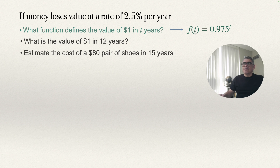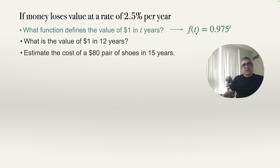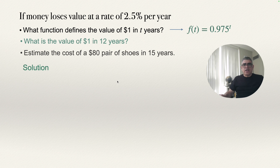Let's write the answer at the top: f(t) = 0.975^t. The independent variable is time in years. Now I can know the value of the dollar in 10 years, 20 years, etc. The only thing I need to do is substitute t by the number of years I want to compute. For example, in question 2: what is the value of one dollar in 12 years? We know the function is f(t) = 0.975^t.